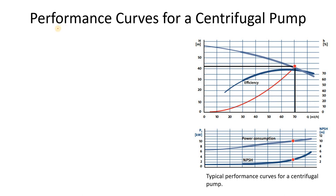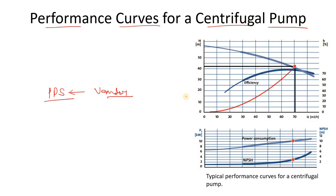Hello, Core Engineering family. In this video we are going to discuss the performance curves for centrifugal pumps. Whenever you prepare the PDS of a pump — that is the process data sheet — and you ask for a technical offer from the vendor, the vendor will provide you the pump curve. We will discuss how to read that curve and what information we can extract from it, covering each type: head versus flow rate, efficiency versus flow rate, NPSH versus flow rate, and power consumption versus flow rate.